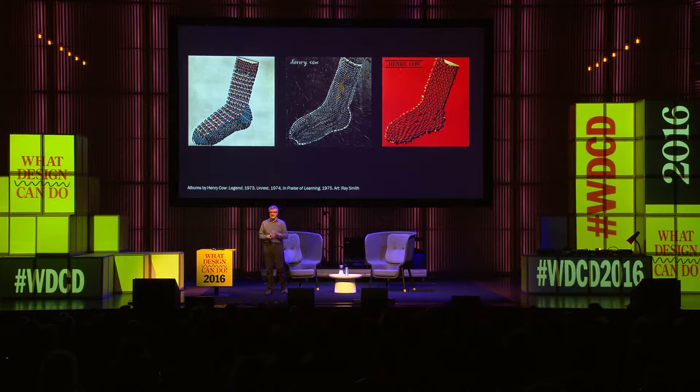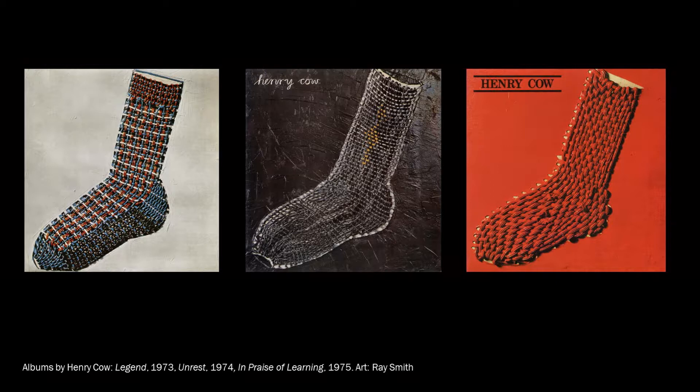Around the same time, this is really obscure now — an experimental British rock band with a political, Marxist background called Henry Cow. They had a series of albums where you just saw a knitted sock on the cover. It's almost a Dadaistic image, and when you compare that to the absolute intricate complexity of the sound world that they create as a band, again you've got this extraordinary gap to think about.